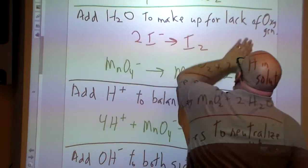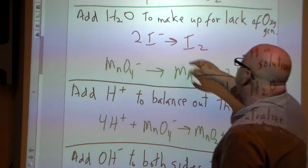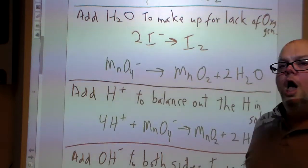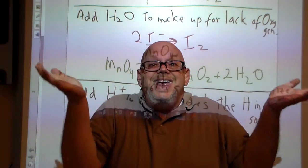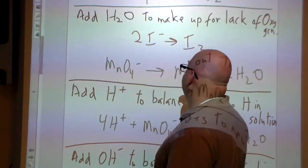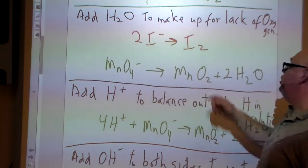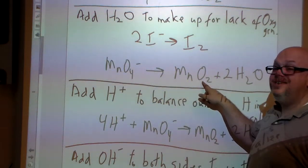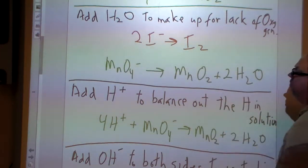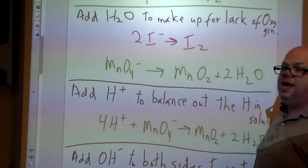We've got 2I minus getting us I2, MnO4 minus getting us MnO2. Now we're going to add water to both sides to make up for the lack of oxygen. If you notice the 2I minus and the I2, there's no oxygen, there's no hydrogen. We don't need to add water to it. Now on the MnO4 and the MnO2, we do. We have a deficit on this side of two oxygen atoms, so that means we'll have to add two waters.